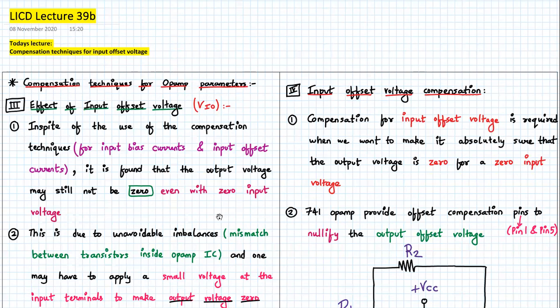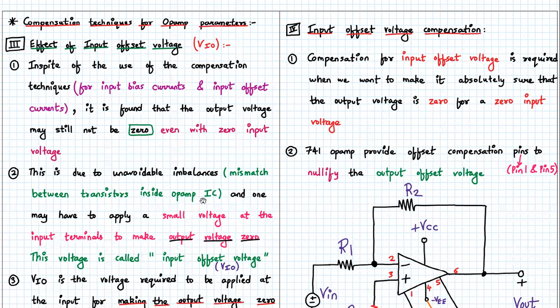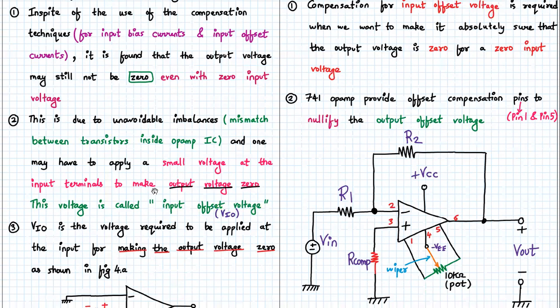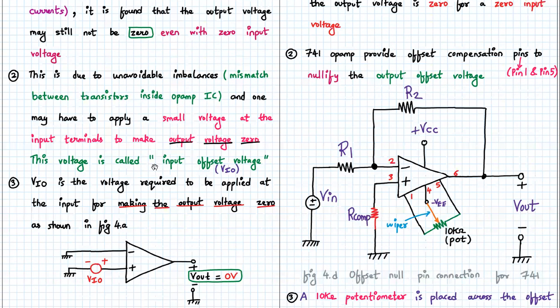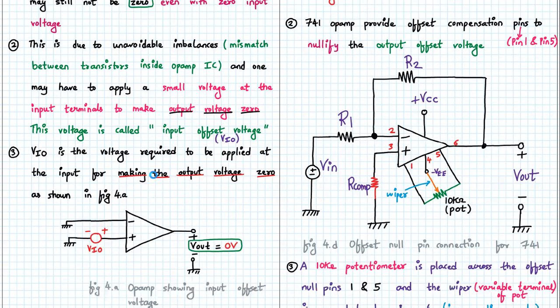The compensation technique for various op-amp parameters we have already seen, and the third one is the effect of input offset voltage VIO. Now in spite of use of compensation techniques for input bias currents and input offset currents, it is found that the output voltage may still not be zero even with zero input voltage. This is due to unavoidable mismatches between the transistors inside the op-amp IC, and one may have to apply a small voltage at the input terminals to make the output voltage zero.